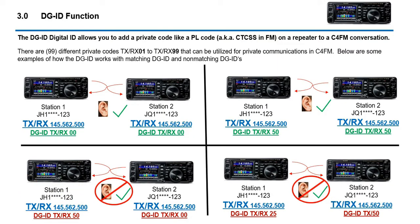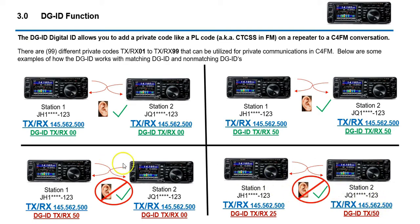This gives you an idea of how the DGID codes work. If your radios are on the same DGID code, you'll have communication. We're going to program number 50 into our radio and demonstrate this. If you had a group at code 50 and another at code 0, those stations would not be able to talk. Same thing — if you had one at 25 and one at 50, they would not be able to talk or hear each other. That's how DGID works.